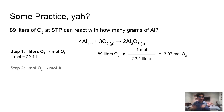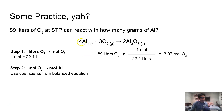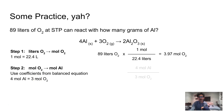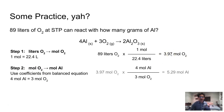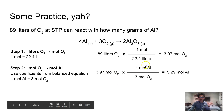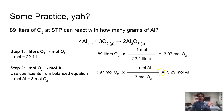Step two, I'm changing my moles of O₂ to moles of aluminum using the coefficients from the balanced chemical equation. I know 4 moles of aluminum equals 3 moles of O₂. Moles of aluminum are the unit I want, so this goes in my numerator, and moles of O₂ are the old unit — down in the denominator. I'll multiply 3.97 moles of O₂ by 4 divided by 3, and that gives me 5.29 moles of aluminum.